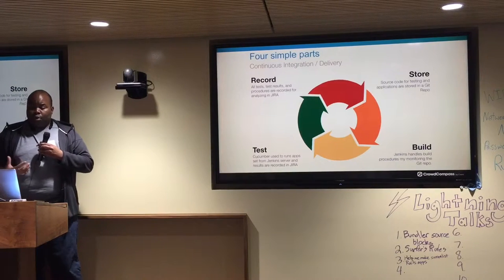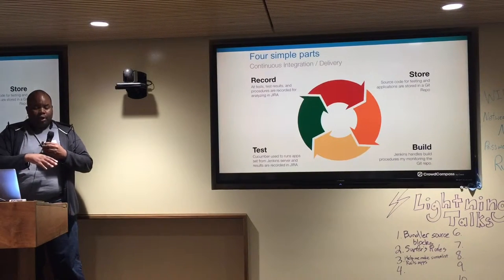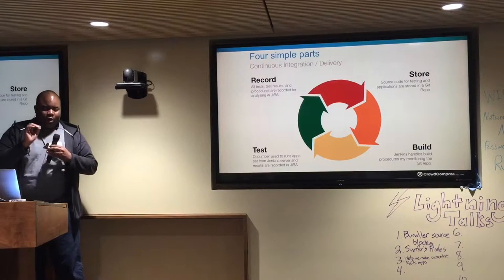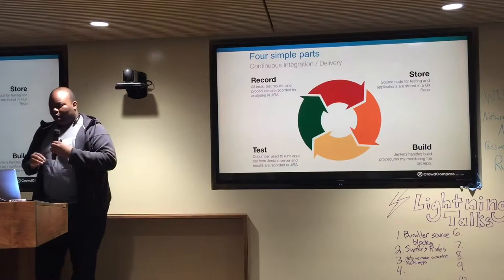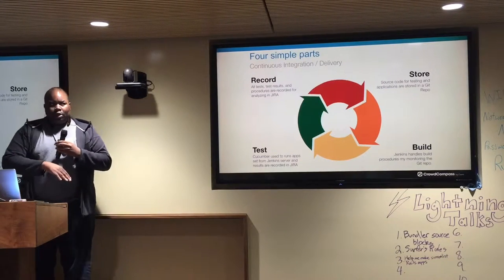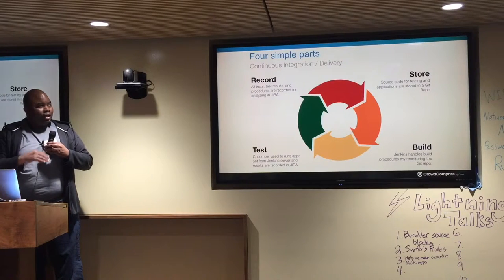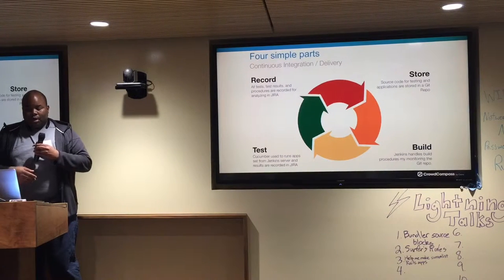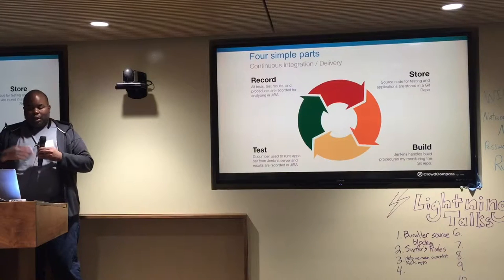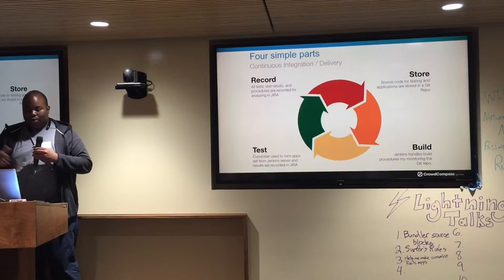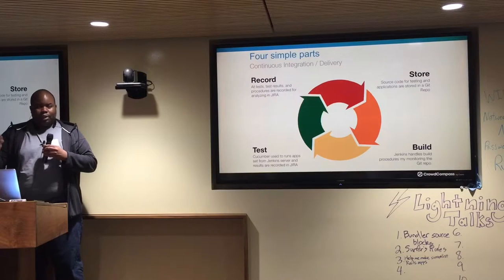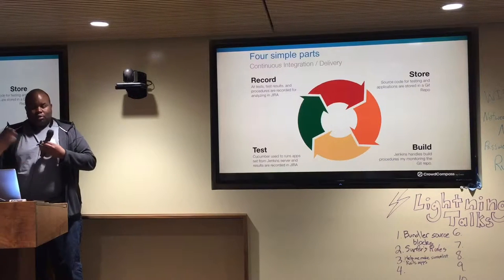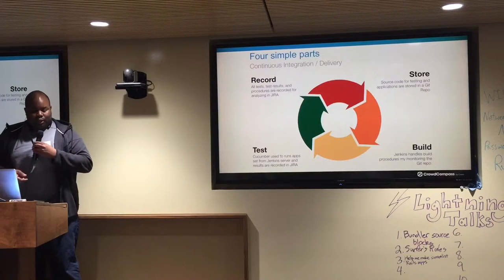We use Jira for recording all of our tests and test results in one specific area, so it's kind of a one-stop shop. We are able to export our tests into Stash, which is our Git repo. Jenkins monitors everything and does a pull request if it sees any changes to the Git repo, then builds our application — either iOS, Android, our websites, or any sort of API testing we need to do.